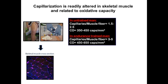In contrast to most tissues of the body, capillarization in skeletal muscle is plastic and readily altered in relation to use of the muscle. Skeletal muscle utilizes large amounts of oxygen during endurance exercise, and the capillary density in skeletal muscle is important for oxygen diffusion from the blood to the muscle cells.